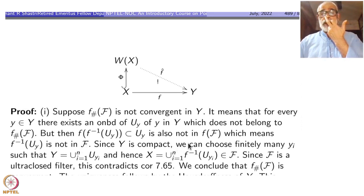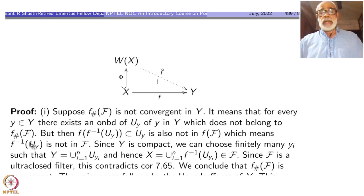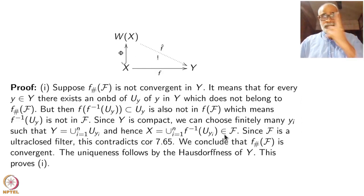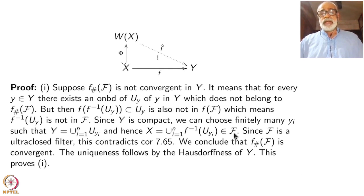Since y is compact, we can choose finitely many y_i's such that y is covered by finitely many open sets U_{y_i}. Taking inverse images, they will cover x. So x is the union from i equals 1 to n of f-inverse of U_i. This x is inside F. We are using the result proved last time. This means one of the f-inverse of U_i's must be inside F, which is a contradiction. So we conclude that f-check of F is convergent.